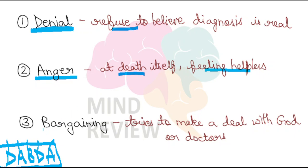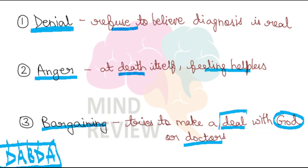After that comes Bargaining. In this stage, the person may try to make a deal with God or with the doctors themselves — 'Free me from this diagnosis and I will do this and that, I'll feed these many children, I'll leave all my bad habits.' They are trying to get out of the label of that diagnosis or the tag of being someone who will soon die.